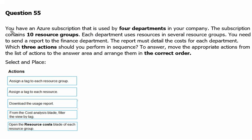You have an Azure subscription that is used by four departments in your company. The subscription contains 10 resource groups. Each department uses resources in several resource groups. You need to send a report to the finance department, and the report must detail the cost for each department. Which three actions should you perform in sequence?